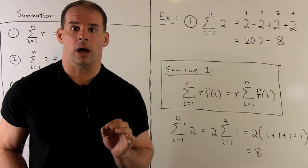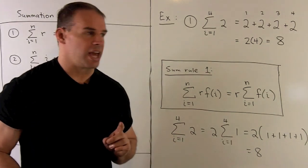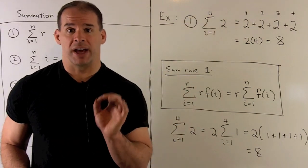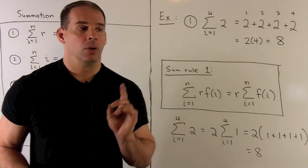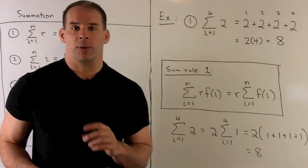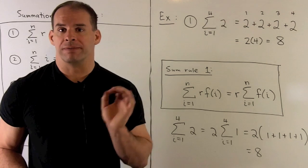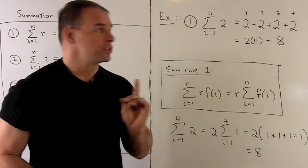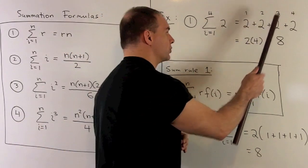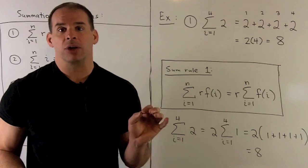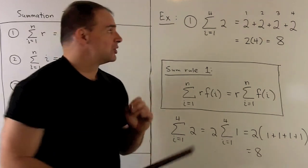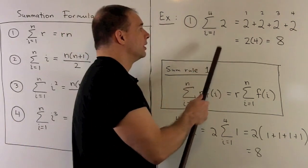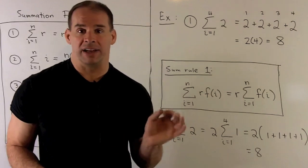Let's take a closer look at Formula 1 with a concrete example: the sum as i goes from 1 to 4 of the number 2. The range goes from 1 to 4, so we have the numbers 1, 2, 3, 4. We push them through the function 2, so whatever goes in, a 2 comes out — 1 goes to 2, 2 goes to 2, 3 goes to 2, 4 goes to 2. We sum the values and get 8. Using the formula, n equals 4 and r equals 2, so we multiply and get 8 as expected.